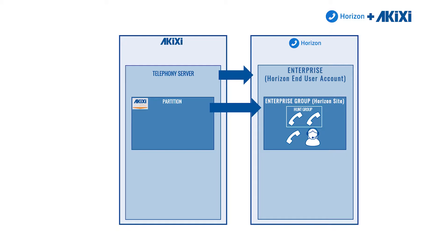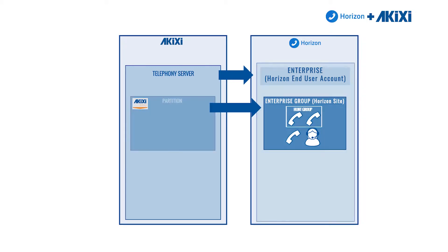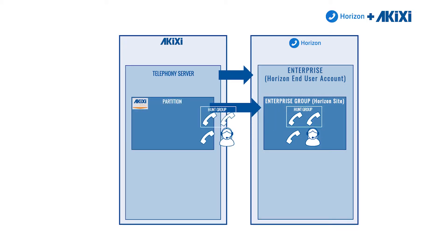Once you've connected the partition to the enterprise you can then look at bringing all those devices and entities you want to monitor across onto Akixi. Once you've connected the partition you then need to synchronize the two. When you synchronize, you have the option of just bringing non-billable entities or all entities within the enterprise group across onto the Akixi partition for monitoring.